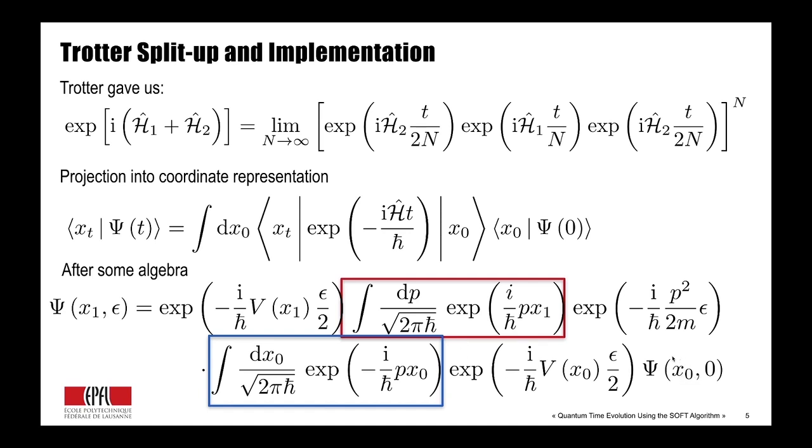We start here in our coordinate representation, and then Fourier transform it to our momentum basis. In the momentum basis, we then apply our kinetic propagation, which has a P in it, and then we go back from momentum basis to coordinate basis using a Fourier transform again, and then can apply our potential propagation a second time to complete the time step.